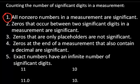Zeros that occur between two significant digits in a measurement are significant. Zeros that are only placeholders are not significant. So we need to distinguish the difference between digits and placeholders so we know how to count them.